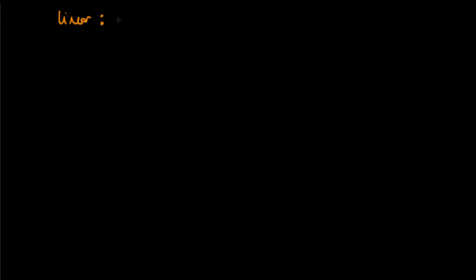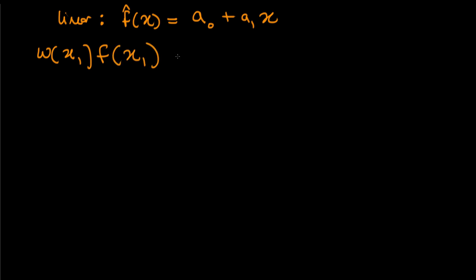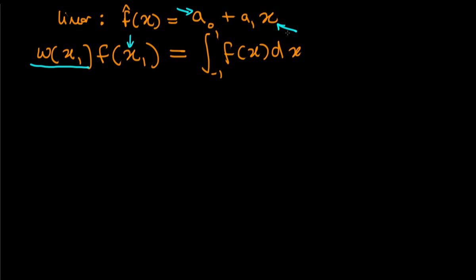Now I want to show how we can work out the x values and the weights for a simple model. We'll start with a linear approximation to f: just a0 plus a1 times x. We're going to work out one x value and the weight at that x value which, when multiplied by the function value, gives the exact integral from minus one to one of f(x)dx. We've got two unknowns — the x point and the weight — so we need two equations.